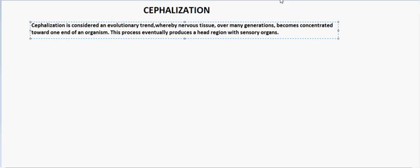Let us write a definition of cephalization: cephalization is considered an evolutionary trend whereby nervous tissue, over many generations, becomes concentrated towards one end of an organism. This process eventually produces a head region with sensory organs.